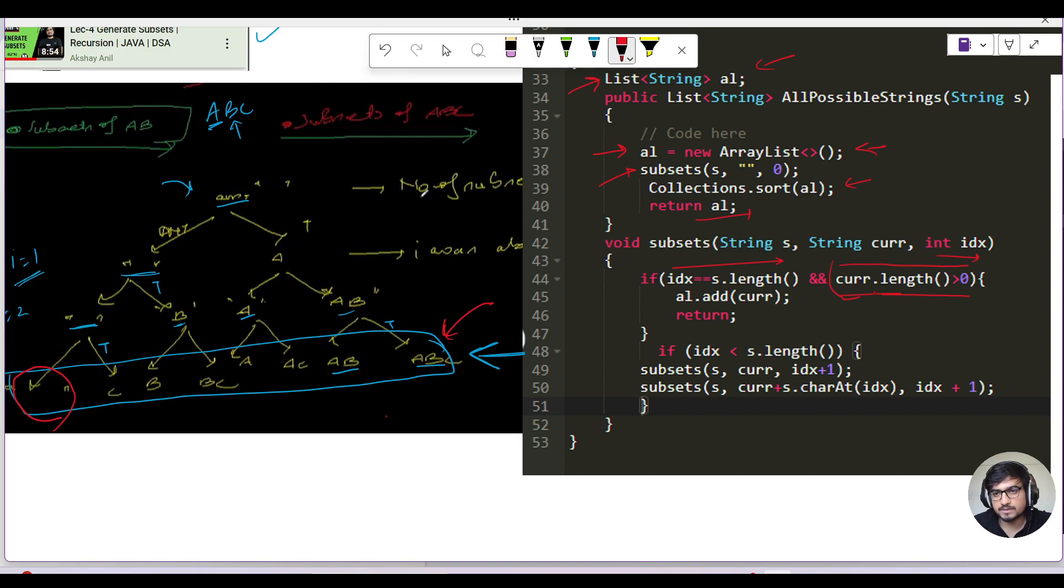One possible answer is an empty string, which we don't want. That's why we have an extra case: current.length greater than zero. If that's the case, you add it to your ArrayList and return from there.